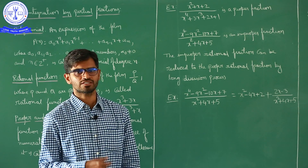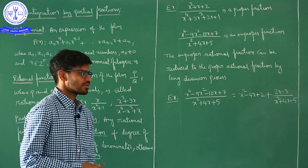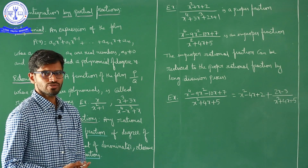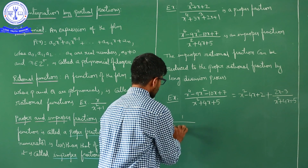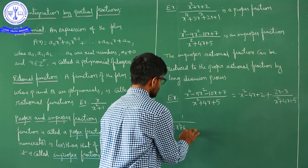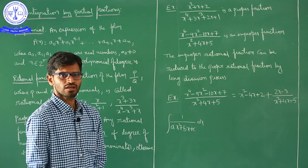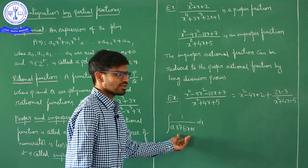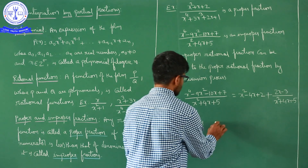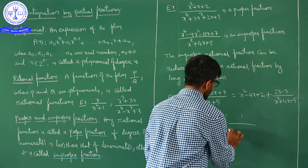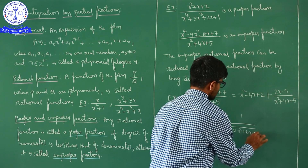Next concept is integration by partial fractions. Before going to this concept, let's revise what we discussed in the earlier exercise — problems of the form integration with a constant in the numerator and a quadratic function in the denominator, or 1 upon square root of Ax² + Bx + C.